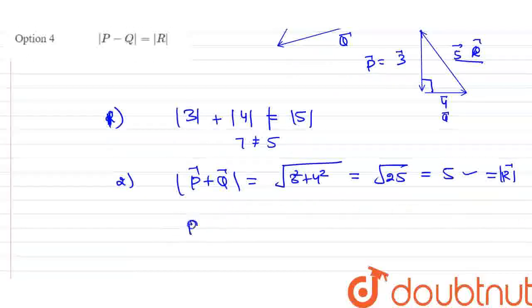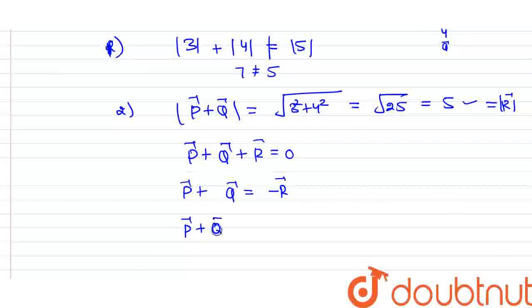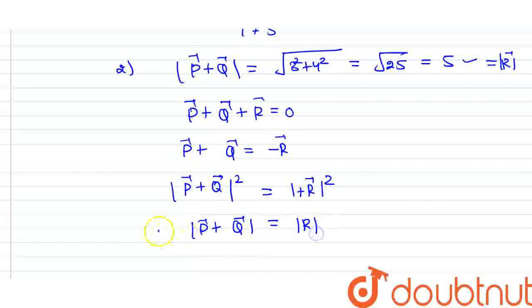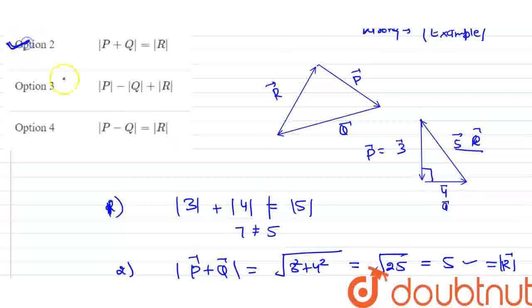Now let's do the mathematical proof. P vector plus Q vector plus R vector equals zero. So P vector plus Q vector equals minus R vector. Now squaring both sides, P vector plus Q vector squared equals R vector squared. This is the mathematical proof that P vector plus Q vector magnitude equals R vector magnitude. So the second statement is the correct option.